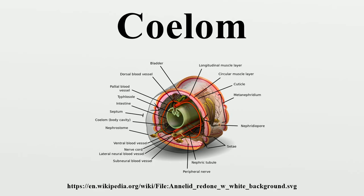According to Brusca and Brusca, bilaterian phyla without a coelom include Platyhelminthes, Gastrotricha (traditionally viewed as blastocoelomates), Entoprocta (traditionally viewed as blastocoelomates), Gnathostomulida (traditionally viewed as blastocoelomates), and Cycliophora. According to others, acoelomates include the cnidarians, ctenophores, platyhelminthes, nemertea, and gastrotricha.